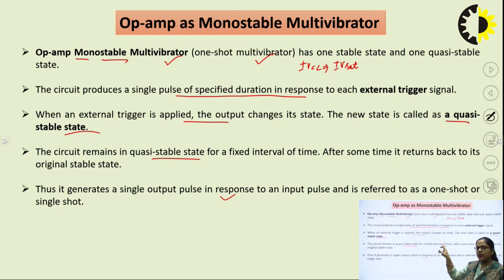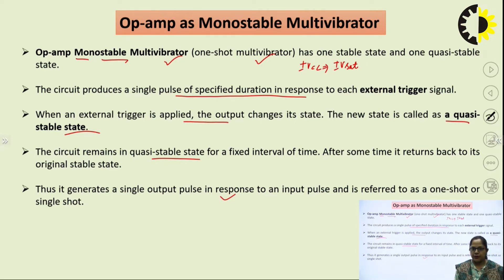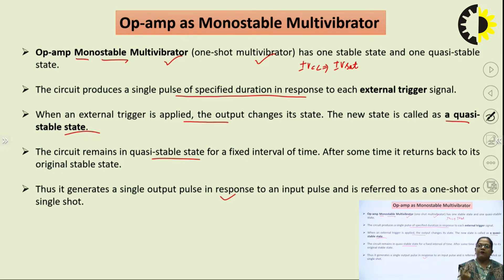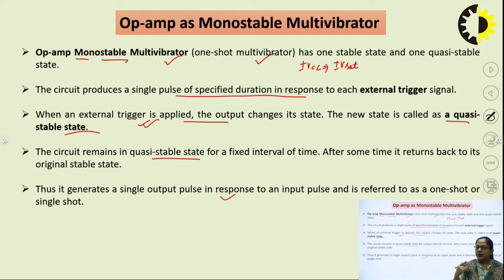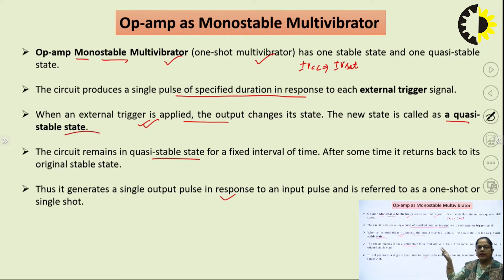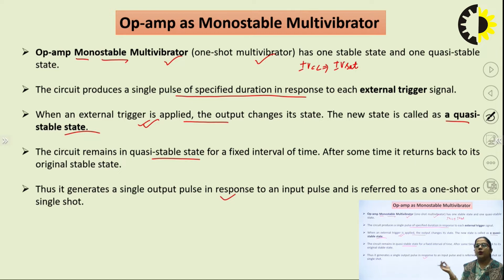When we want to ring the doorbell, we press the switch — the pressing of the switch we can consider as external triggering. The doorbell starts ringing for a specified duration and after that it comes back to its stable state. If we want to ring it again, we have to press the switch again — we have to apply another external triggering pulse. This is a very easy example we can connect with the working of monostable multivibrator.